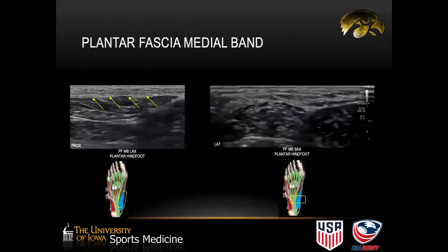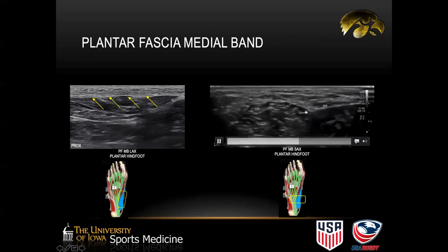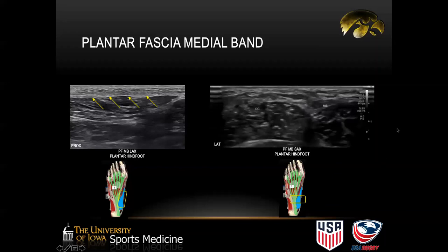Regarding the medial band of the plantar fascia — I personally have not seen pathology in this region. It's the fibrous tissue that branches out medially and covers the abductor hallucis. You can see this hyperechoic structure fanning out medially in this cine loop. For this patient, the medial band is normal, and because I haven't really seen much pathology here, I don't often comment on it extensively.